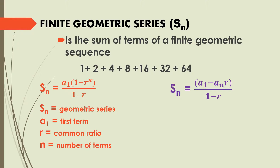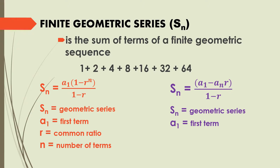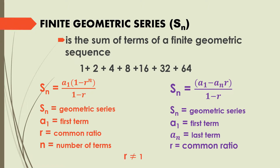Or we can use the second formula: S sub n equals (a sub 1 minus a sub n times r) all over (1 minus r), where S sub n is the geometric series, a sub 1 is the first term, a sub n is the last term, and r is the common ratio. We can use either formula, but make sure that r should not be equal to 1.